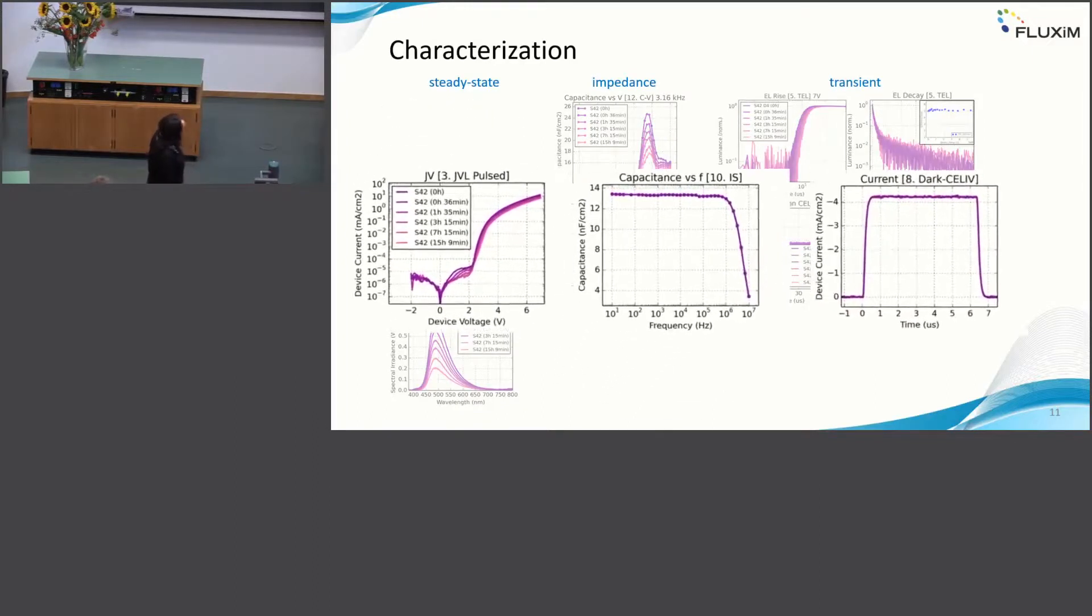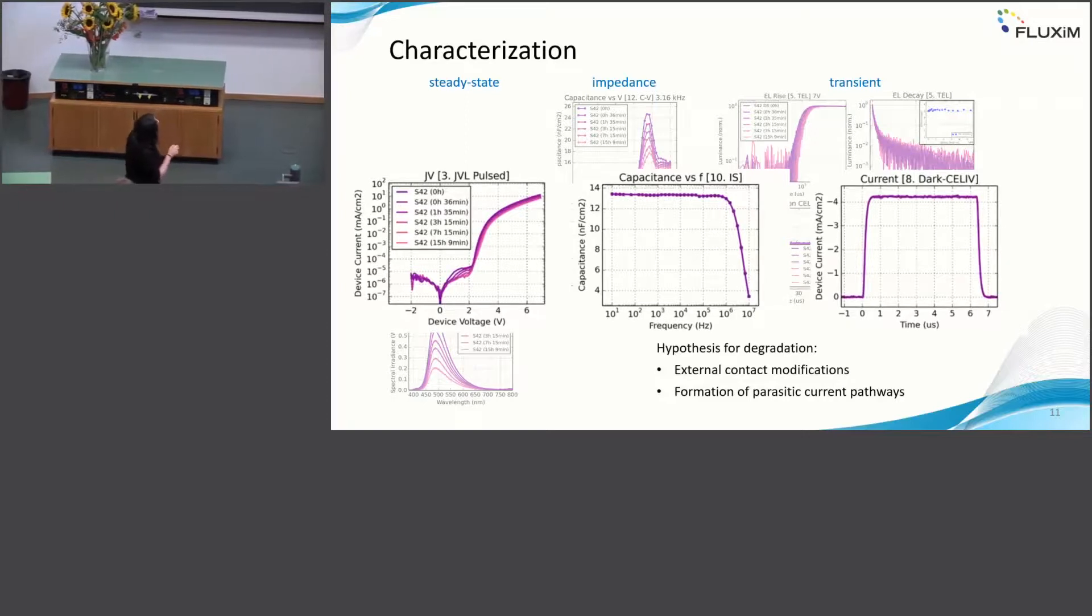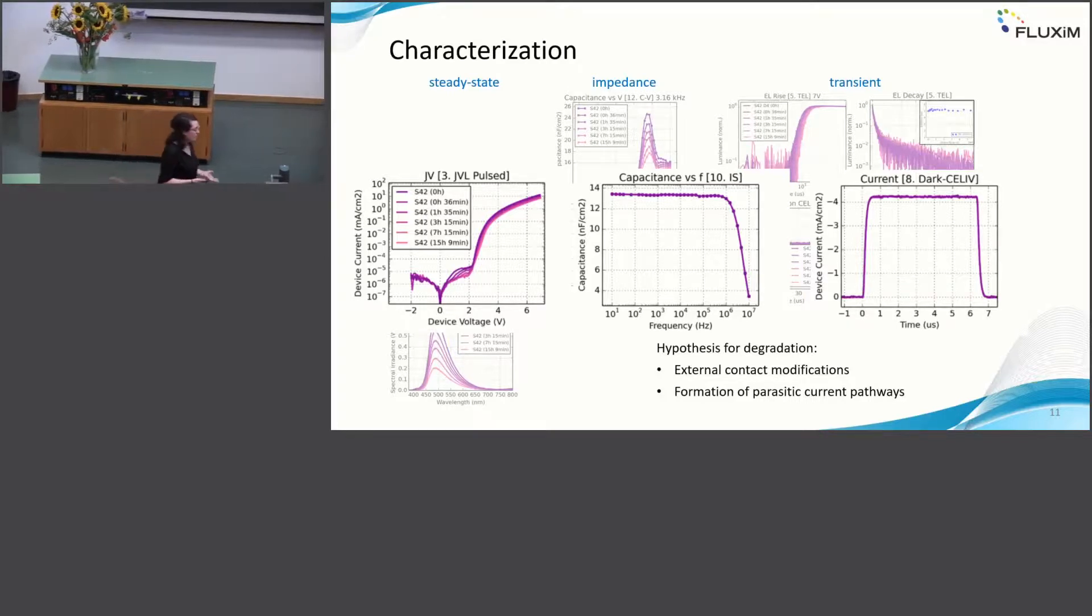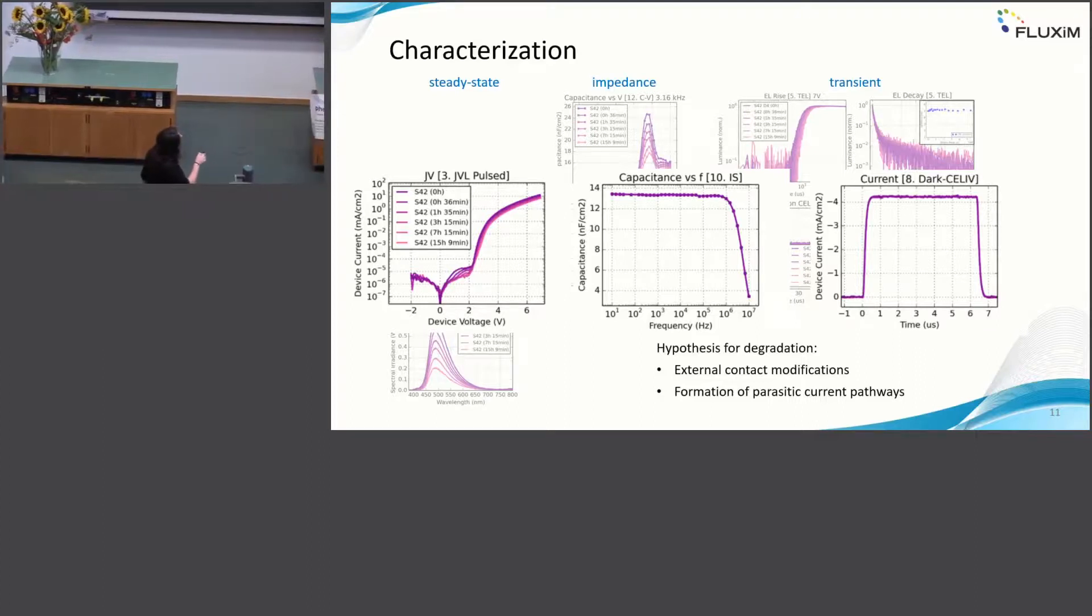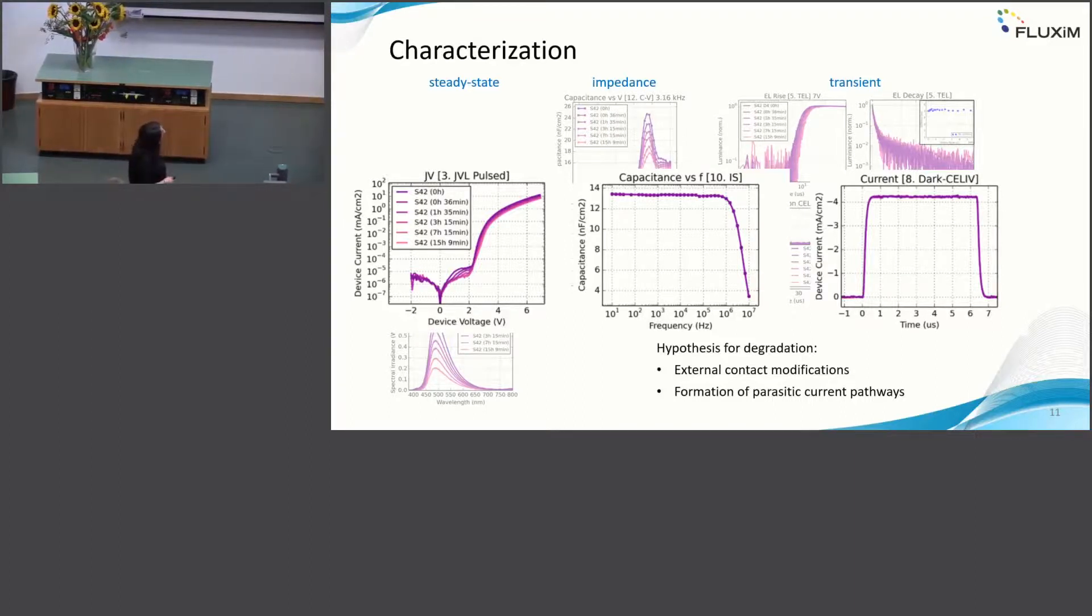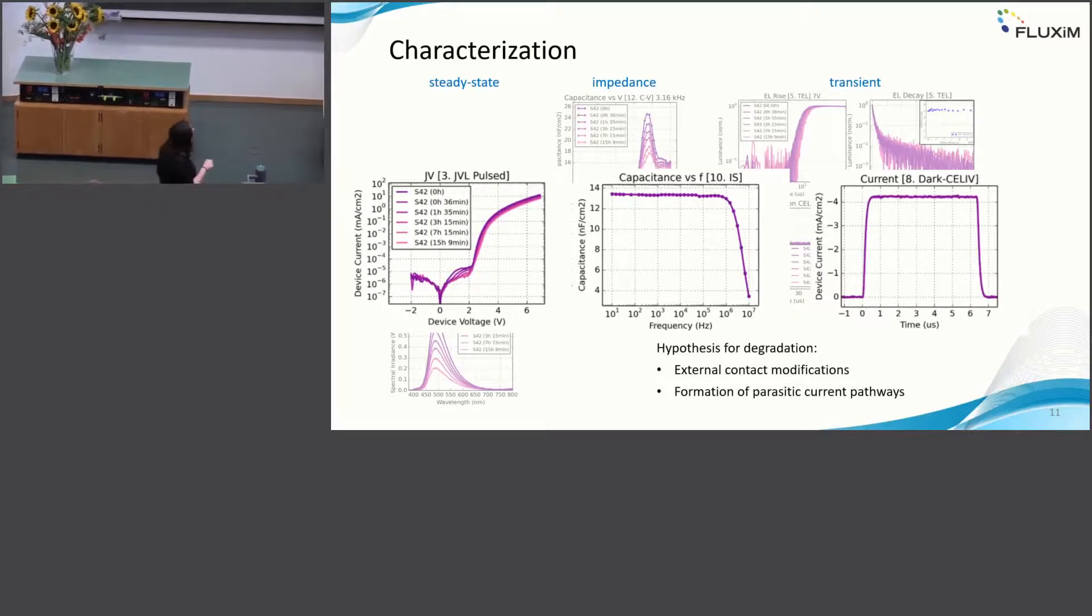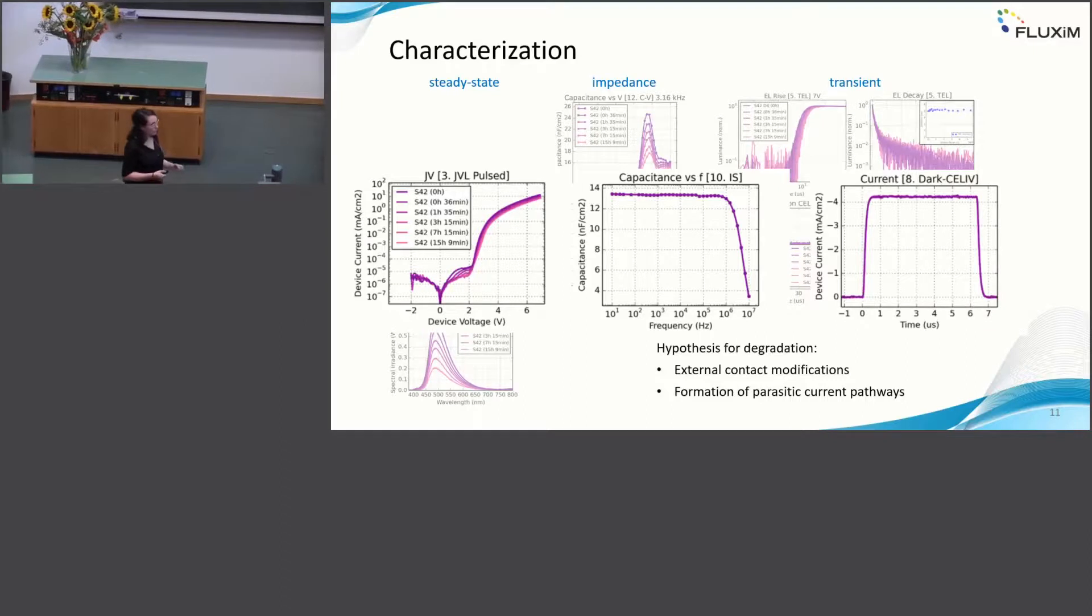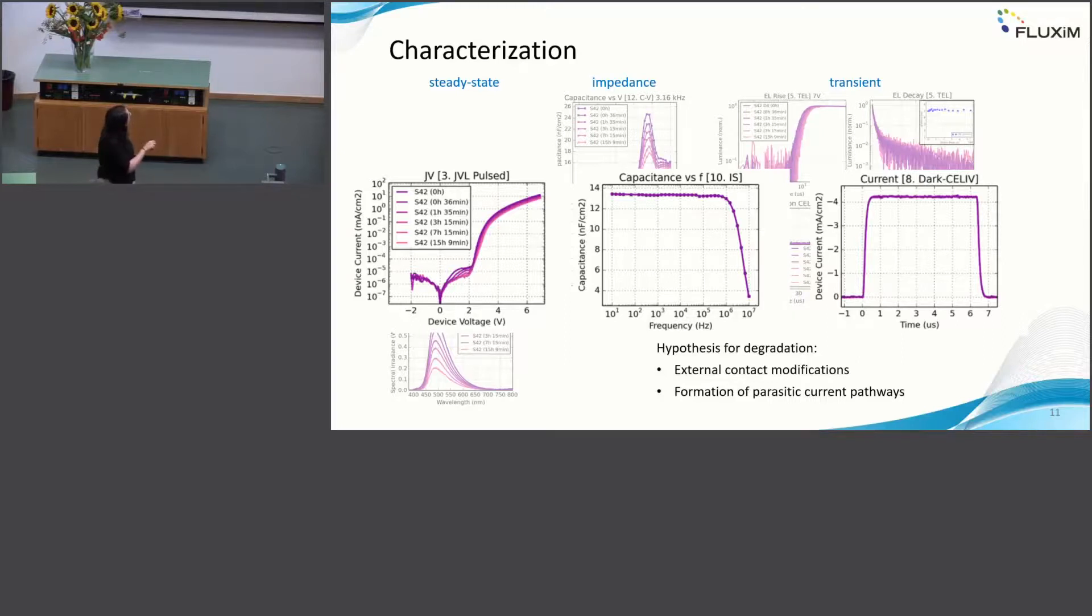As a first thing, we just look at a simple device hypothesis, the failure mechanism, which would be external contact modification. If series resistance would increase, you would directly see something in this decay of the CF behavior or also in the rise of the dark sea leaf. We can already exclude this external contact modification to be a reason for our degradation. Also formation of parasitic current pathways, which would increase the shunt or decrease the parallel resistance. We would see it in this kind of measurement. We would see an increase here in the reverse IV curve or also in the rise, sometimes in the dark sea leaf. So we can already exclude this to be the reason for our degradation.